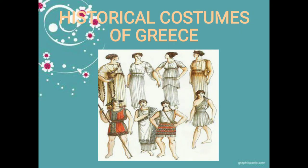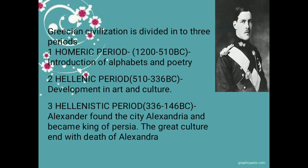Today we are going to discuss historical costumes of Greece. Greece's civilization was divided into three periods: the first is the Homeric period, the second is the Hellenic period, and the third is the Hellenistic period. The Homeric period spans from 1200 to 510 BC.